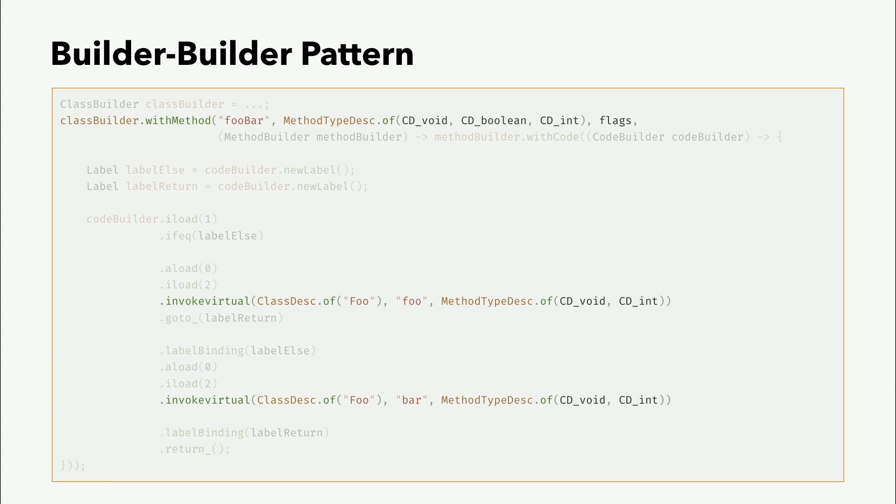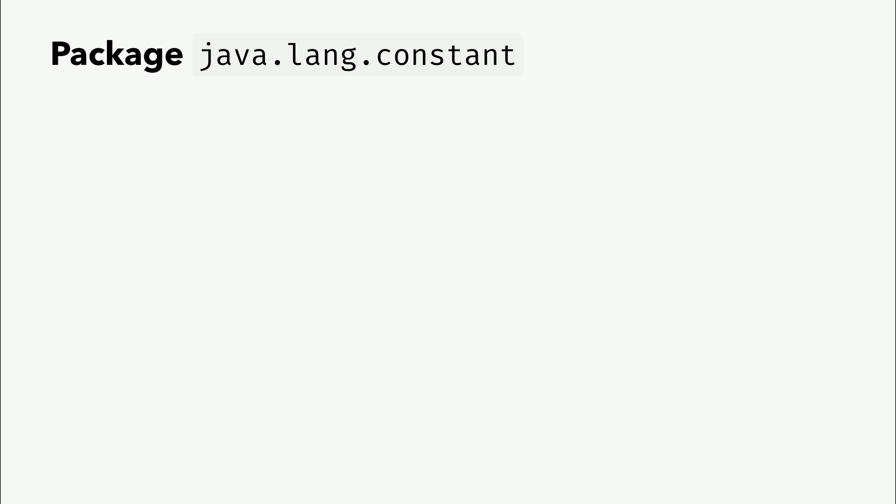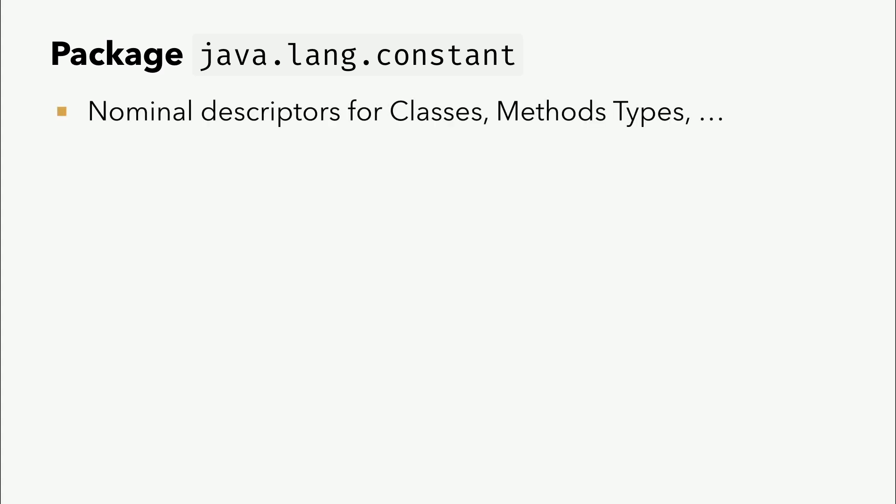Was aber vielleicht auffällt: wir haben jetzt plötzlich keine Strings mehr. Vorher hatten wir hier '(ZI)V', jetzt steht hier plötzlich MethodTypeDesc.of. Das kommt aus einem neuen Paket java.lang.constant. Weil das ist, was sie auch versuchen: die API sicherer zu machen und einfacher zu benutzen, indem man weggeht von diesem Stringly-Typed. Man kann zwar alles per Strings definieren, aber Strings sind natürlich fehleranfälliger, als wenn ich strong-typed Objekte habe zum Hantieren. Sie sind strong-typed und nicht mehr stringly-typed.